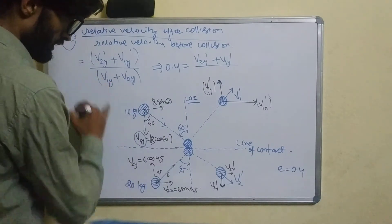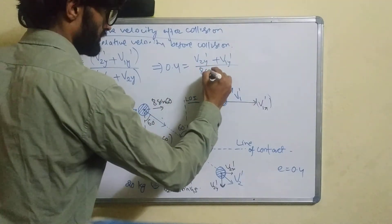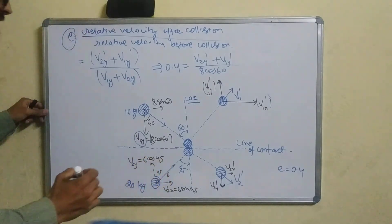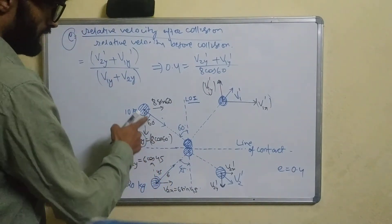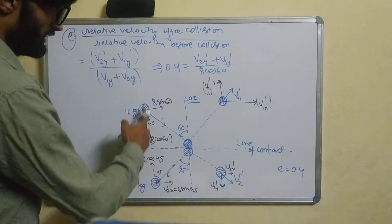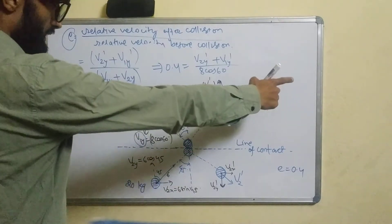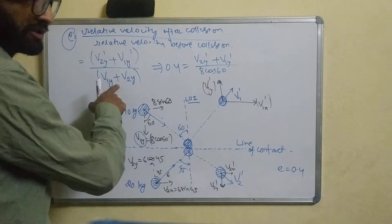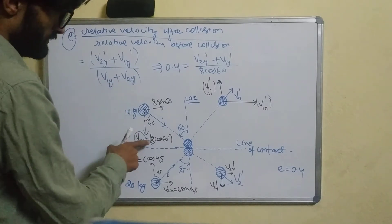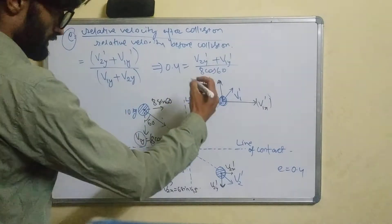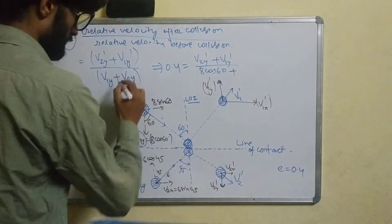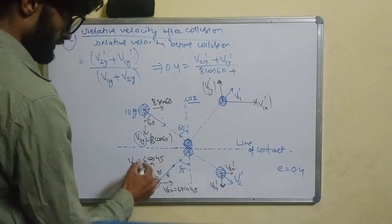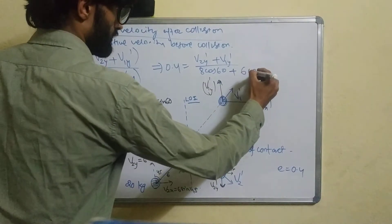Now B1y is equal to 8·sin 60°. This gives a negative relation. If we have negative 8·sin 60°, combined with v2y = 6·cos 45°, then we get: 0.4 = (v2y' + v1y') / (v1·sin 60° + v2·cos 45°).